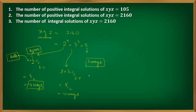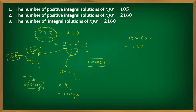So the total number of ways is 15 × 10 × 3 = 450. Therefore, the number of positive integral solutions of x·y·z = 2160 is 450.